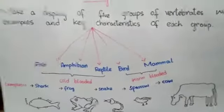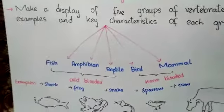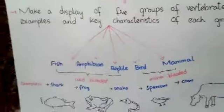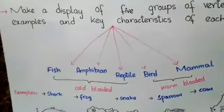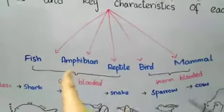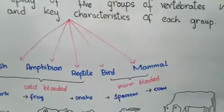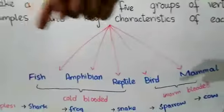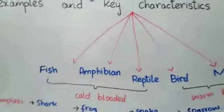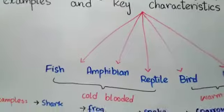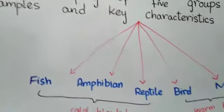Next, we have to write the key characteristics — what makes each organism different from the others, which is why they are placed in different groups. An important common characteristic: fish, amphibians, and reptiles are cold-blooded. Birds and mammals are warm-blooded. The first three — fish, amphibians, and reptiles — cannot maintain or regulate their body temperature, which is why they are cold-blooded.